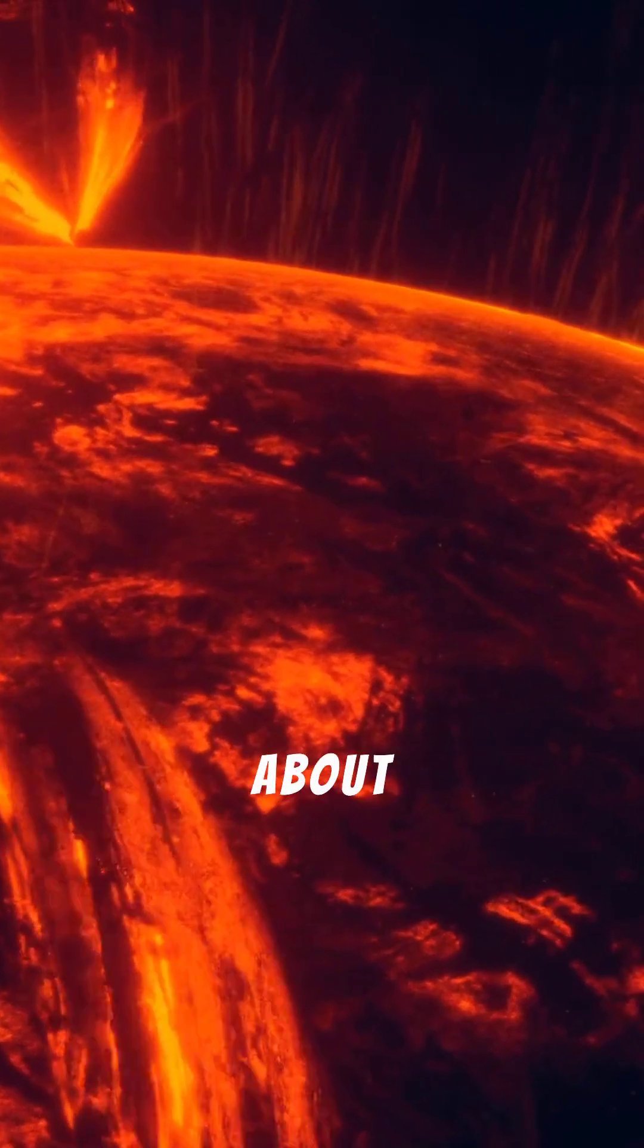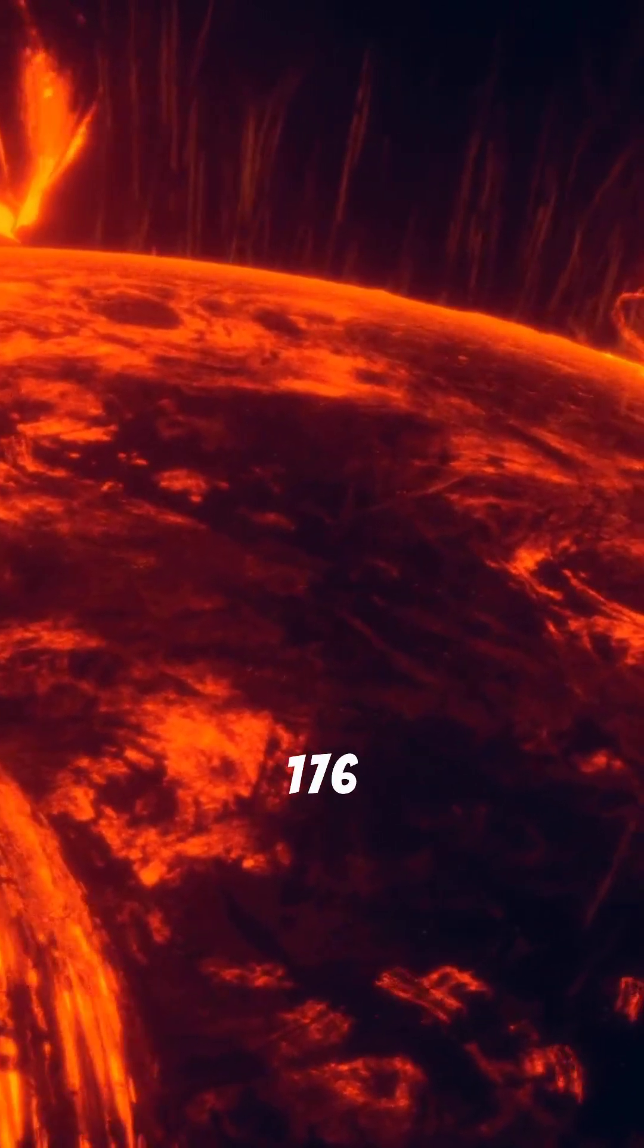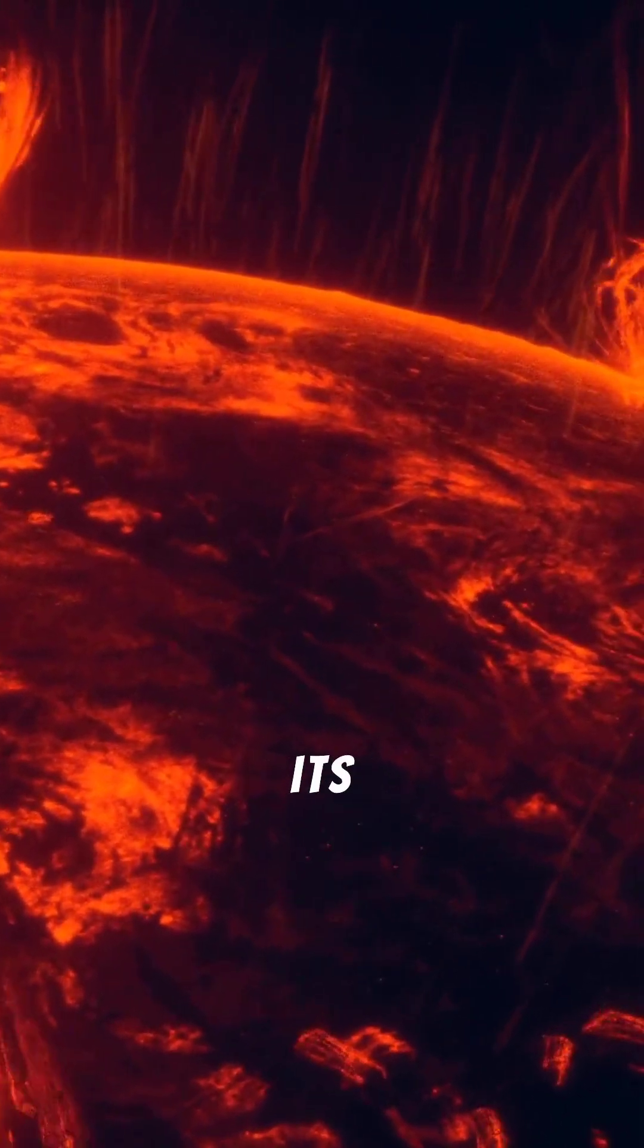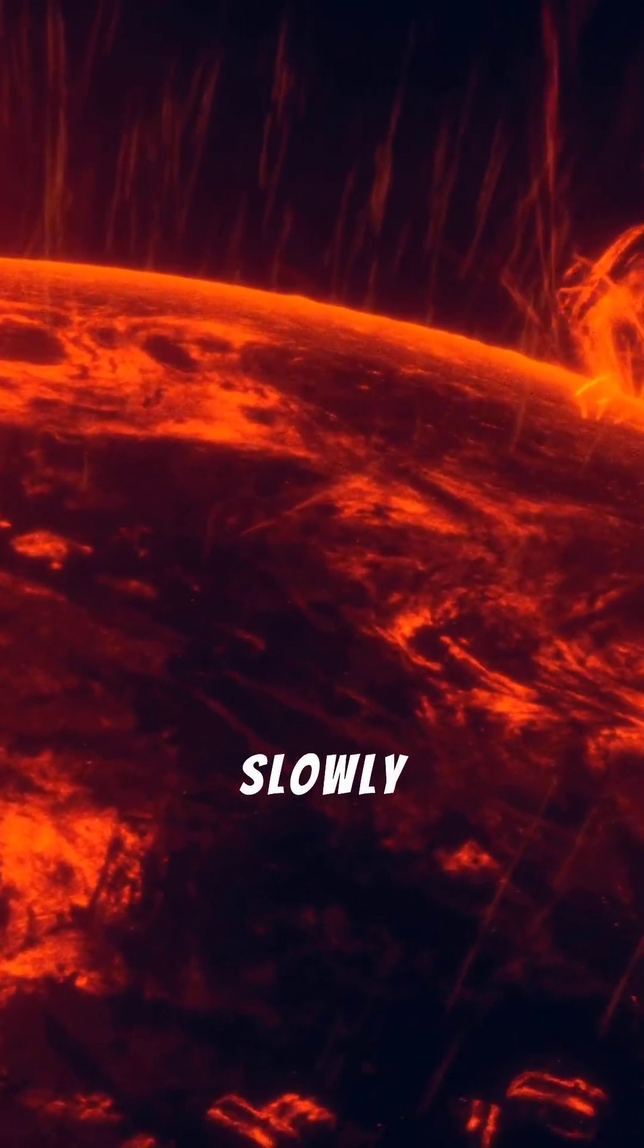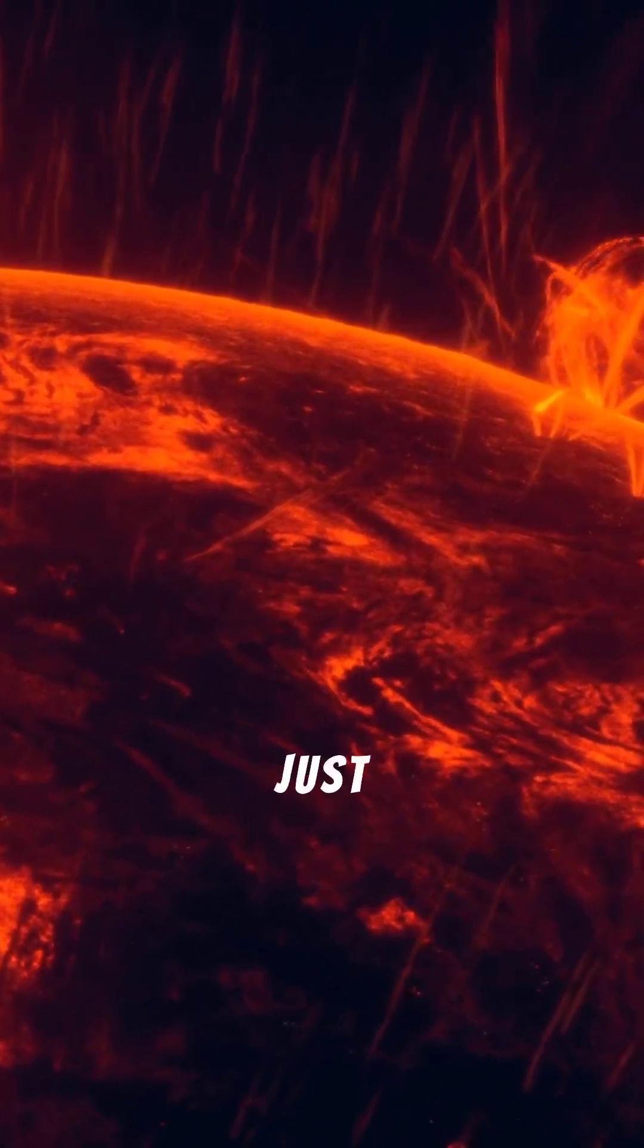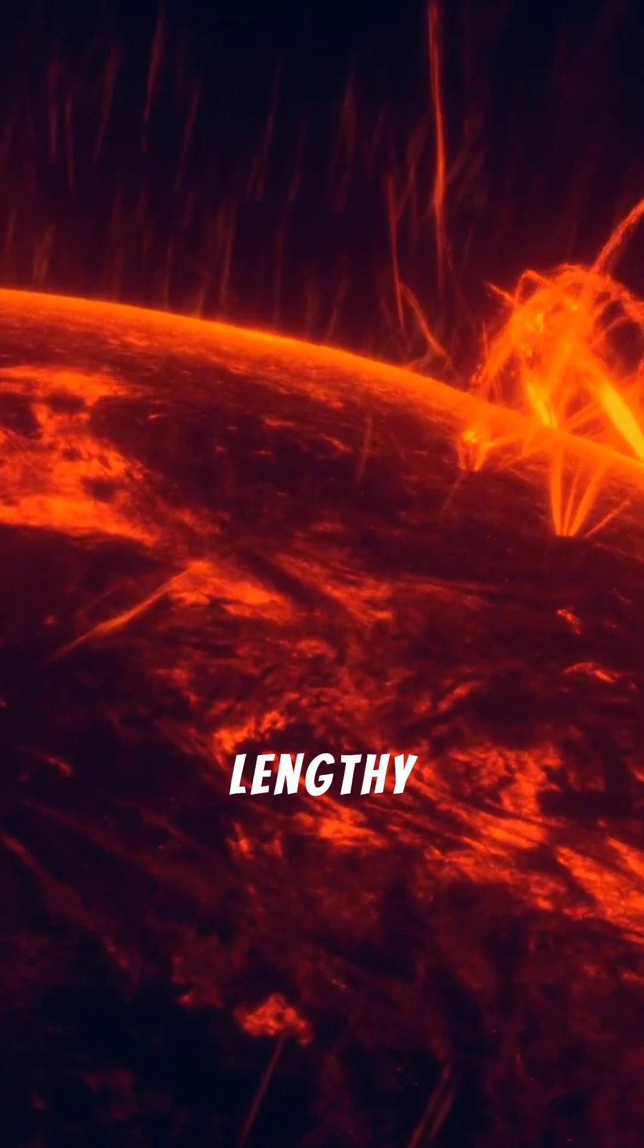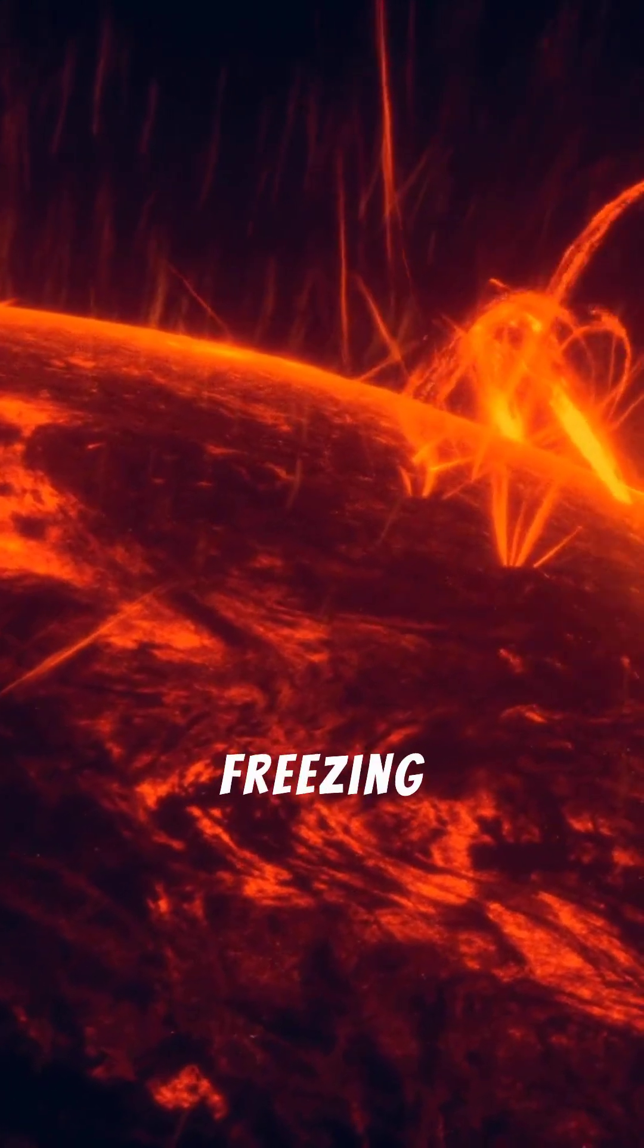Here's an astounding fact about Mercury. A single day lasts a whopping 176 Earth days. If you could stand on its surface, you'd witness the Sun crawl slowly across the sky, and it would take months just to rise and set. This slow rotation creates lengthy periods of scorching sunlight followed by freezing darkness.